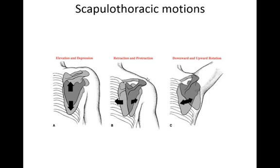Let's look at the scapulothoracic joint and the motions occurring there. The motions include elevation and depression, which is just a planar motion — the scapula sliding inferiorly and superiorly. We have protraction and retraction, another planar motion, with the scapula abducting and adducting on the posterior part of the thorax. And then finally, we have upward and downward rotation — a rotational motion occurring in the frontal plane around a pretend AP axis through the scapula.